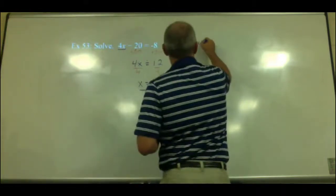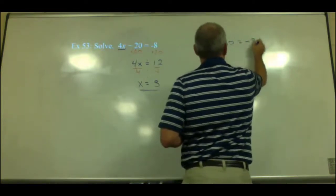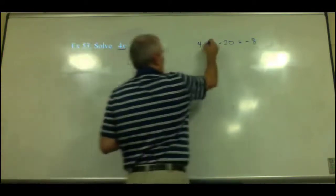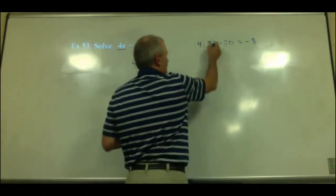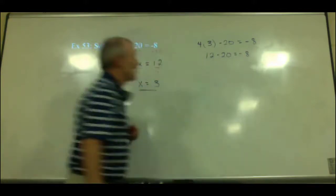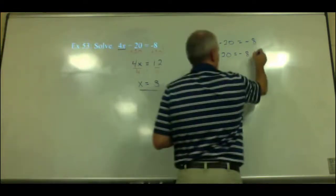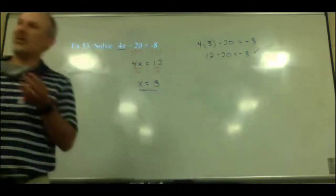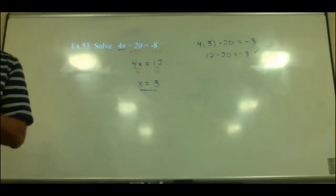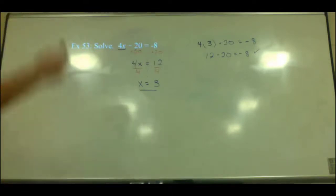Let's check it out. We're going to put in the 3: 3 times 4 is 12, minus 20 equals negative 8. Is that true? Yes, it is. So we know we have the right answer. You can always check by plugging it back in.